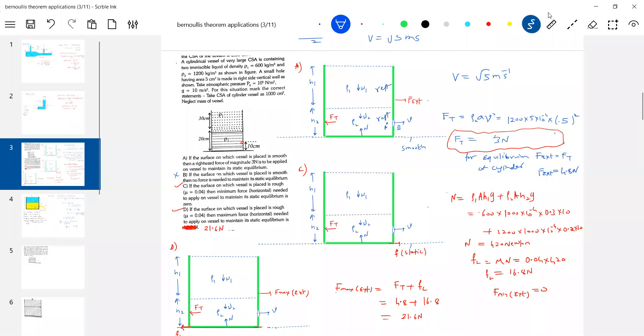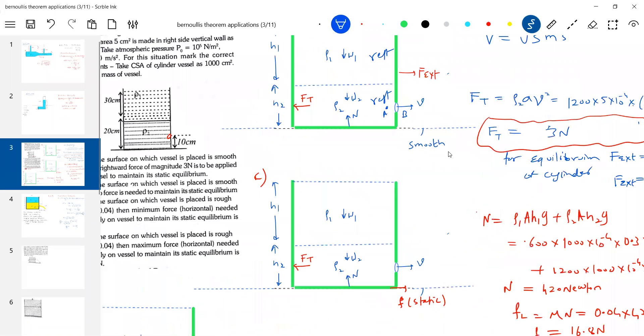There's no problem with this. Here it will be root 5. It will be 3 plus limiting friction, how much we got? 16.8, so 19.8. Yeah, everything will be correct. Let's analyze all options one by one. Thanks, somebody made good observation. I was in error.